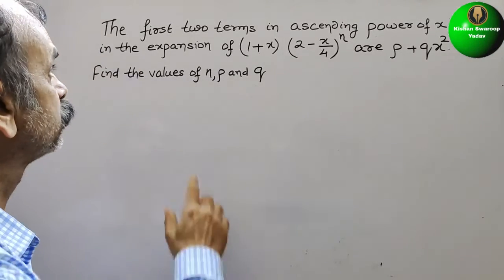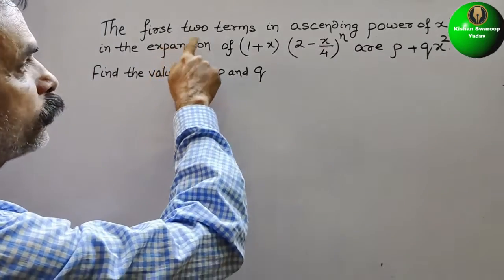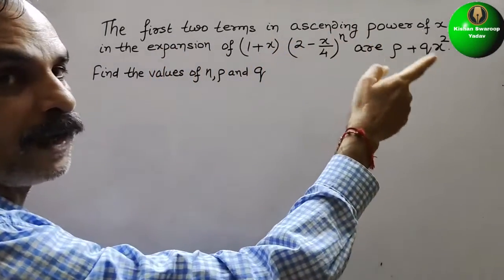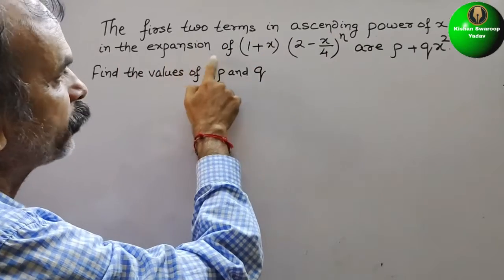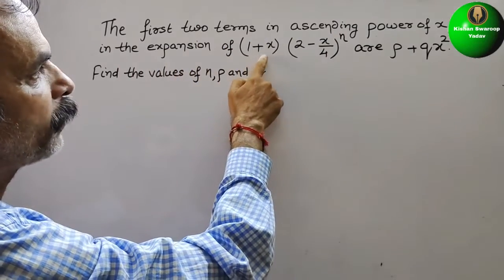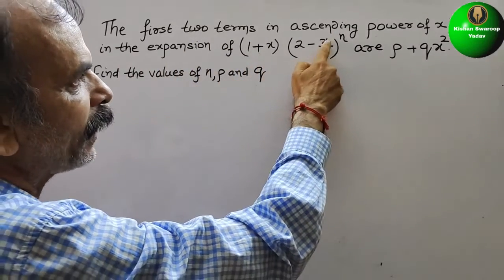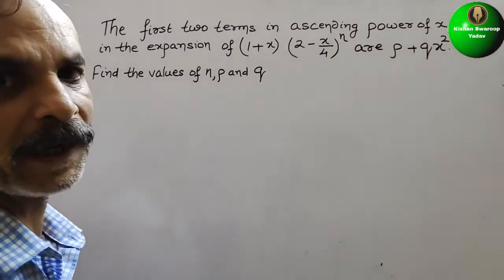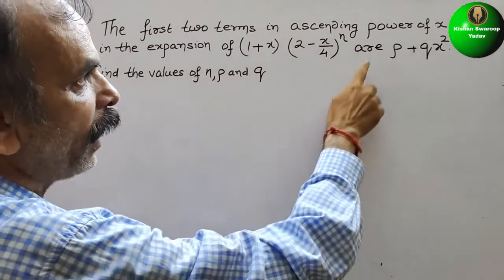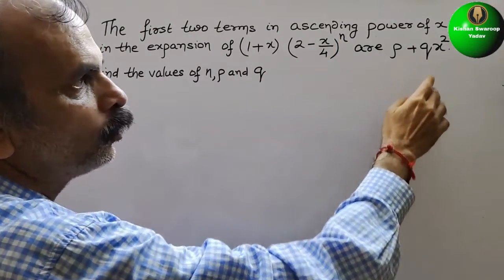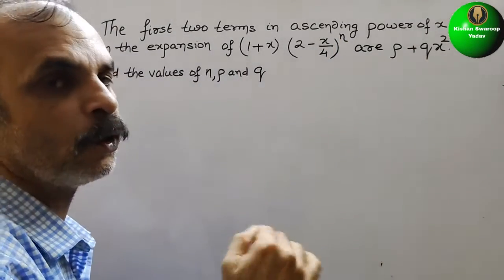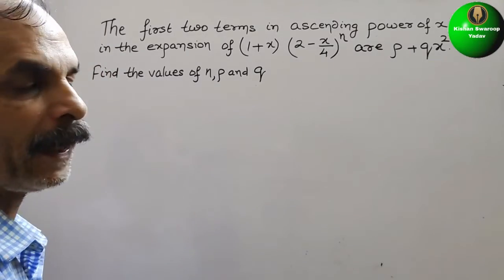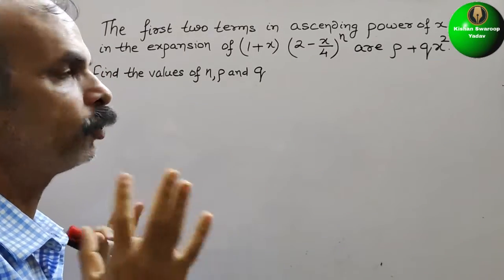Your question is: the first two terms in ascending powers of x in the expansion of (1 + x)(2 - x/4) to the power of n are p + qx². Find the values of n, p, and q.